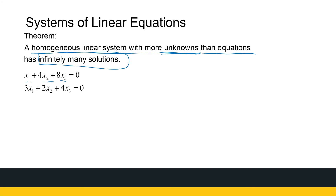That's looking at the solutions of systems of linear equations. We've only used one method to find solutions so far. There are two other methods we're going to look at: the inverse matrix method and Cramer's rule. So look out for those — there are more methods to find solutions to systems of linear equations, and Gaussian elimination is just one of them.